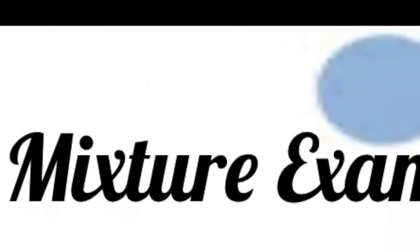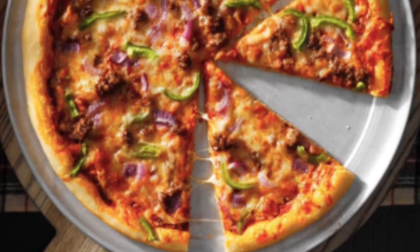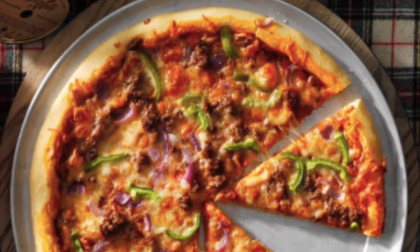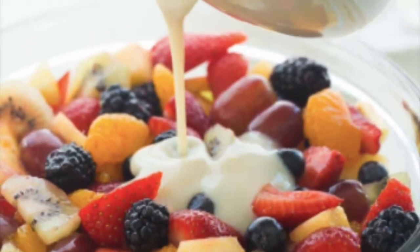Now let's see what are the examples of heterogeneous mixtures. First example is an oil and water. Second is pizza, ice cubes in a drink, cereal with milk, salad, and even a chocolate chip cookie.